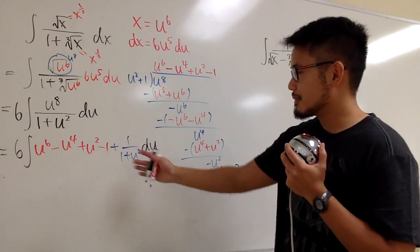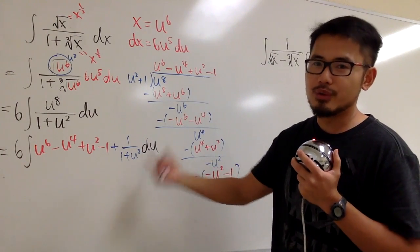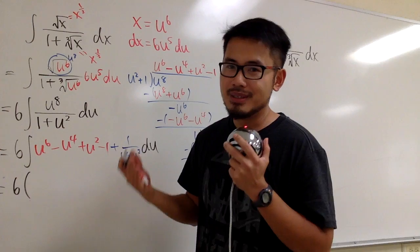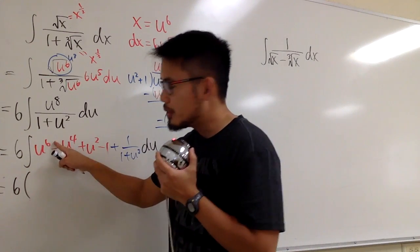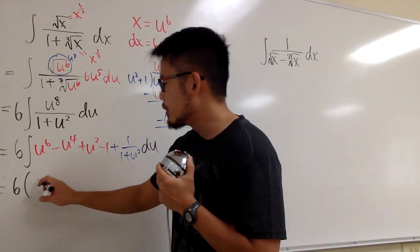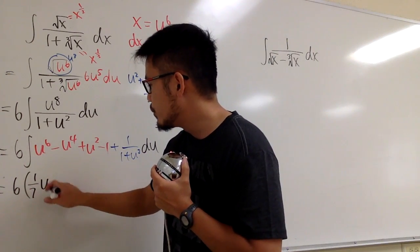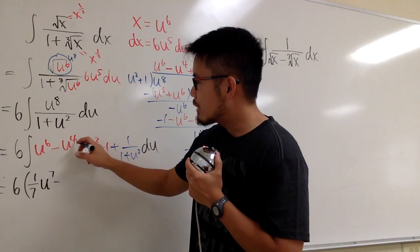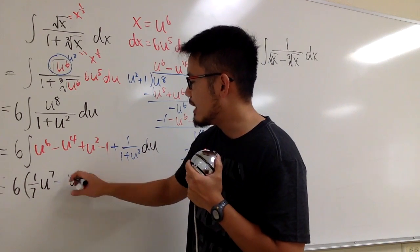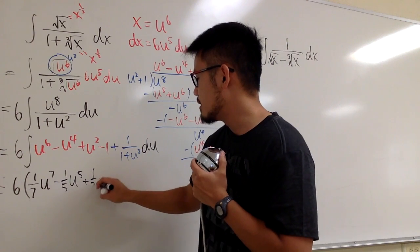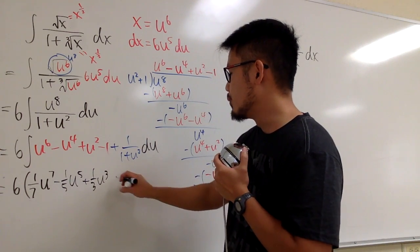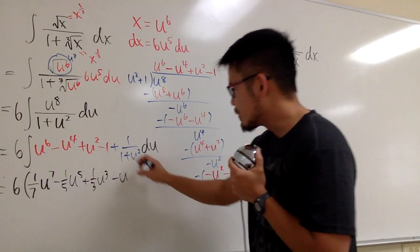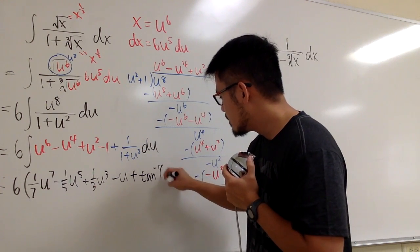Now we're ready to integrate. We still have the 6 out front. Applying the power rule backwards: integral of u to the 6th is (1/7)u to the 7th, minus (1/5)u to the 5th, plus (1/3)u to the 3rd, minus u. And the integral of 1 over 1 plus u squared is inverse tangent of u. So we have 6 times [(1/7)u⁷ − (1/5)u⁵ + (1/3)u³ − u + arctan(u)].